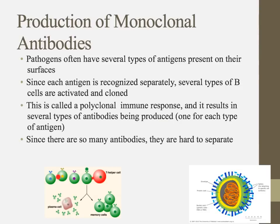Each B cell can produce a different type of antibody, and only the one with the right capability gets activated and clones itself. That B cell actually produces several slightly different versions of the antibody to make sure it gets the right one. This is what we call a polyclonal immune response — poly meaning many. There will be several types of antibodies present, making it difficult to isolate one specific antibody since they are soluble proteins in solution.